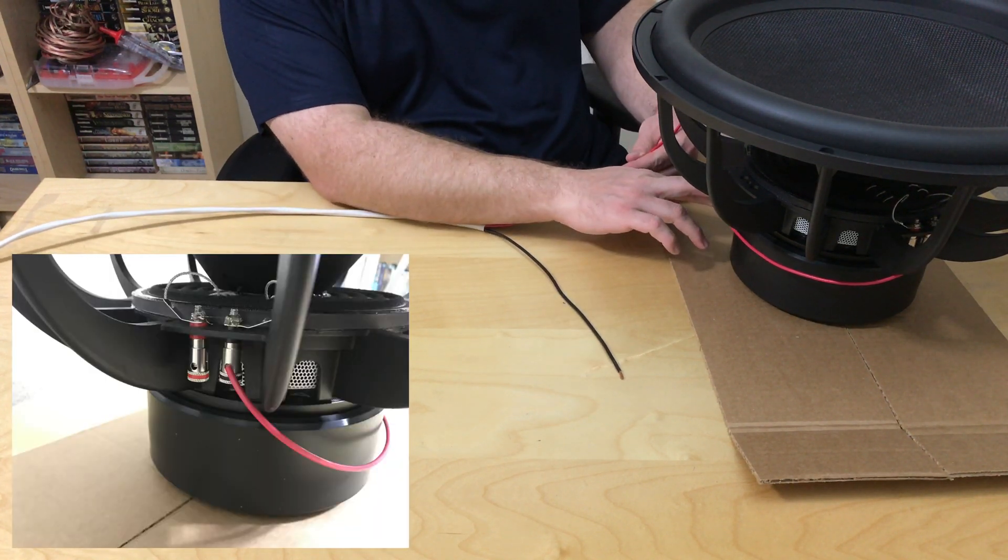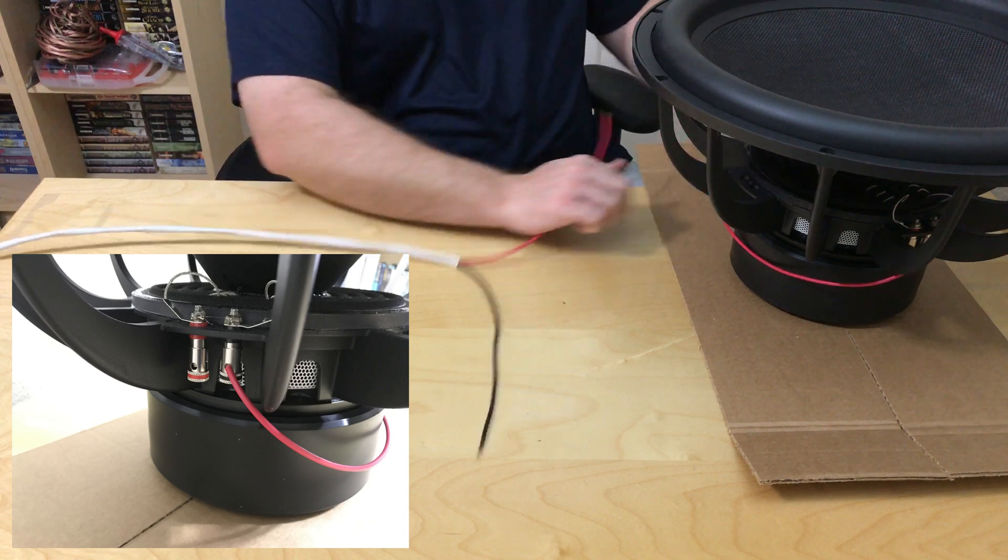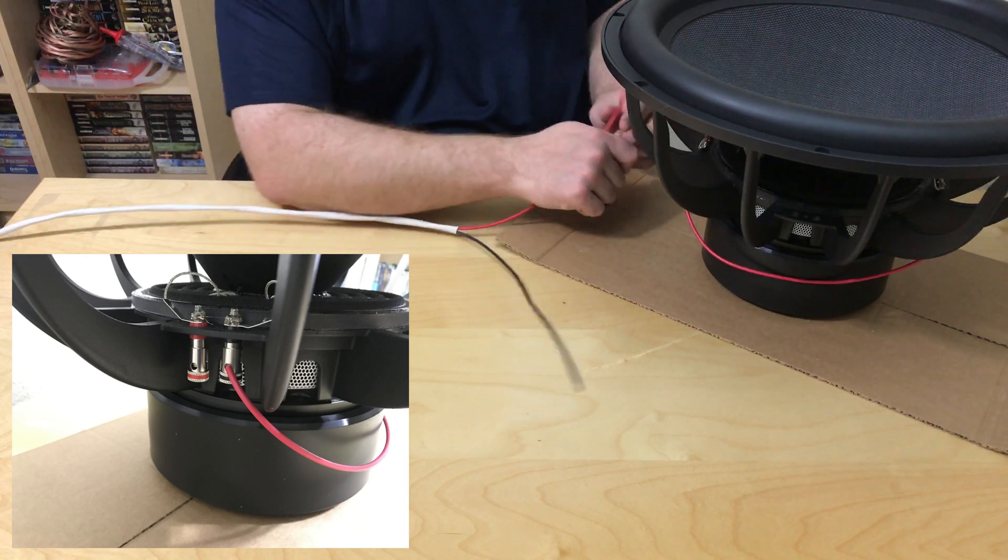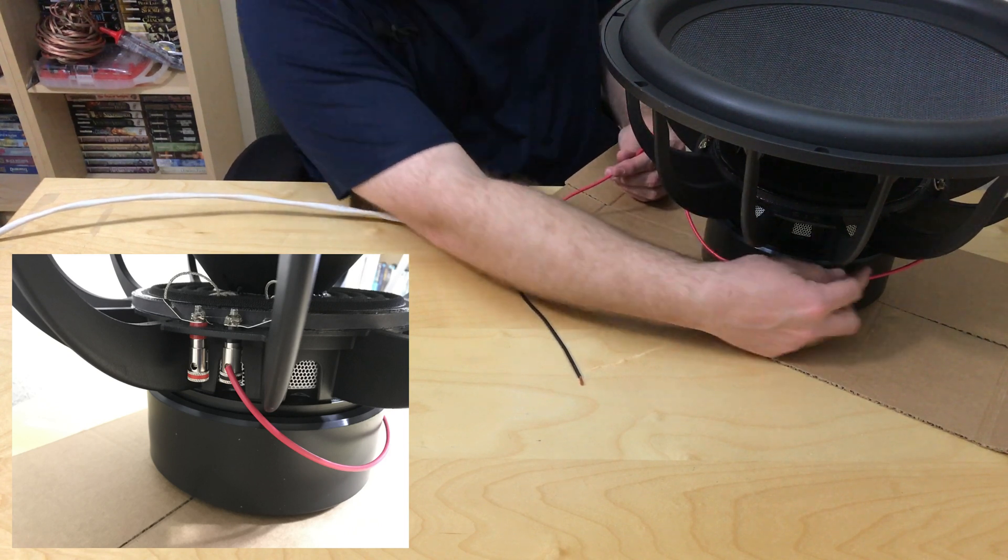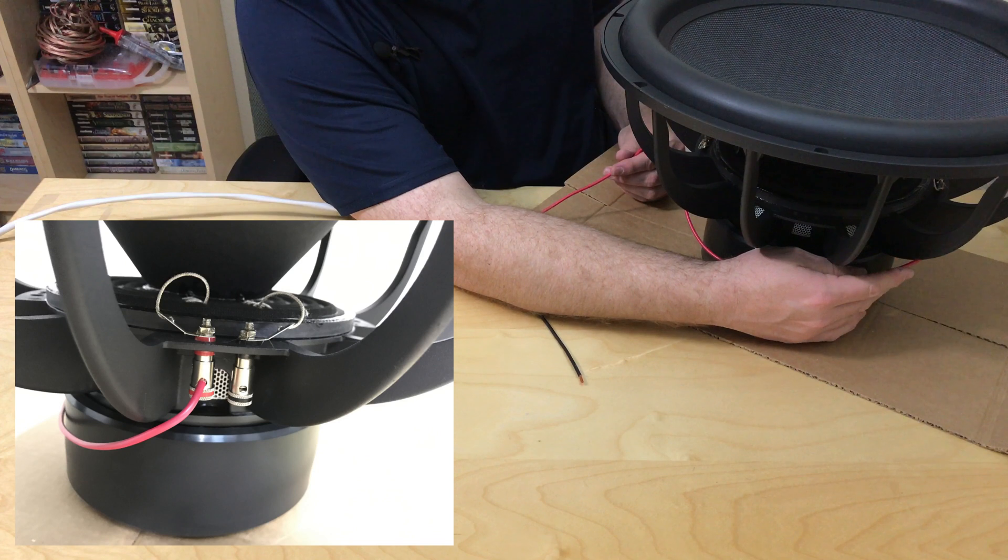Then as you can see, I've already got a cable here. This cable will then transit from the negative of voice coil 1 to the positive of voice coil 2.